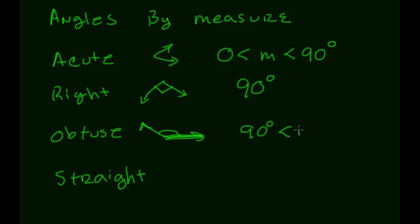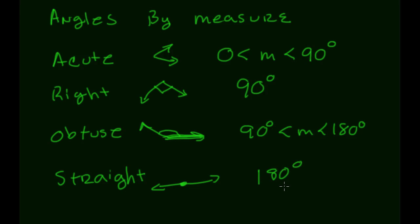And finally, a straight angle — which looks kind of like a line — is an angle whose measure is exactly 180 degrees. So by the protractor postulate, measures run between zero and 180: acute is between zero and 90, a right angle is at exactly 90, obtuse is between 90 and 180, and a straight angle is at 180.